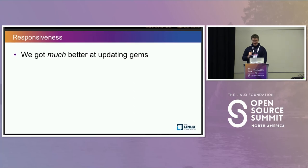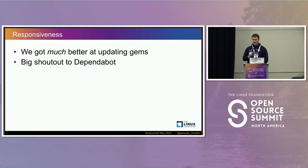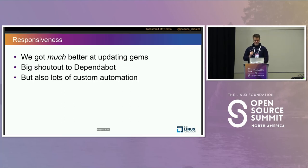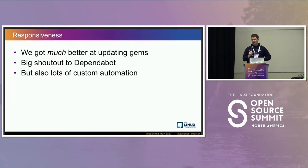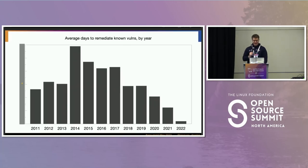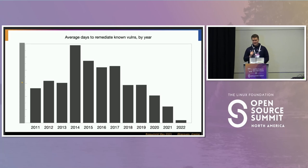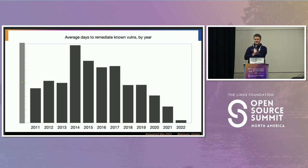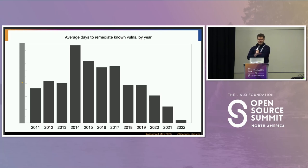We did get better at updating gems. Huge shout out to Dependabot — it made a visible impact. There is also a lot of custom automation. We had pretty bad remediation times; I suspect that 2014 bump is when they went 'oh, we're not actually remediating things' and a whole bunch of stuff got closed that year. But the most important thing is the 2022 plot, which has gone down humongously — big props to Dependabot for making that look so good.